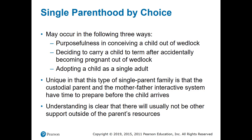Single parenthood by choice may occur in the following three ways: purposefulness in conceiving a child out of wedlock, deciding to carry a child to term after accidentally becoming pregnant out of wedlock, or adopting a child as a single adult. It is unique in that the custodial parent and the mother-father interactive system have time to prepare before the child arrives, with a clear understanding that there will usually not be other support outside of the parent's resources.